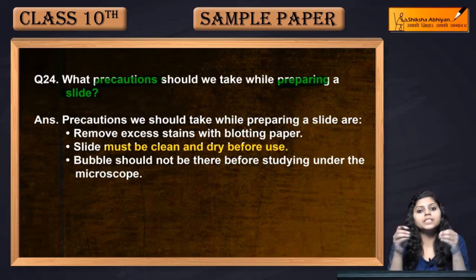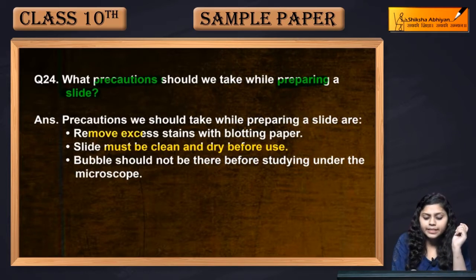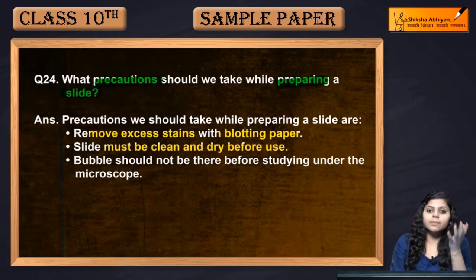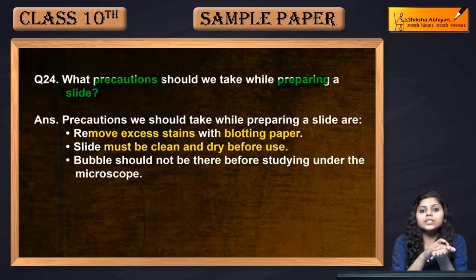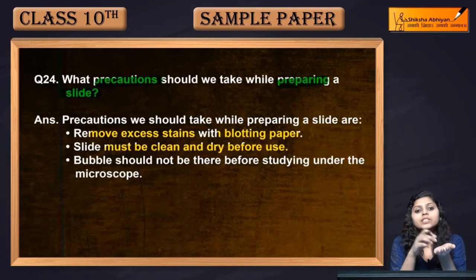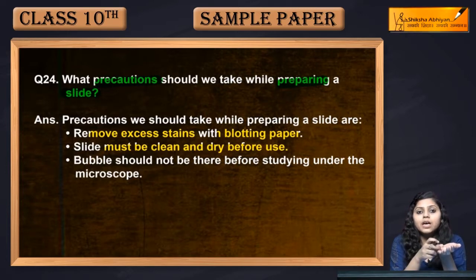If you are staining, you have to remove the excess stain with blotting paper. When you study the slide under the microscope, you will place the cover slip so that there are no bubbles between the slide and cover slip under the substance.